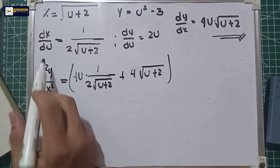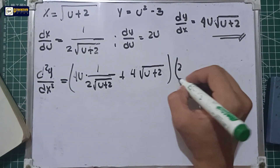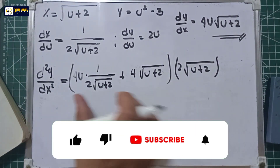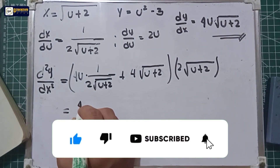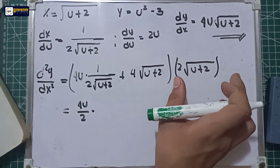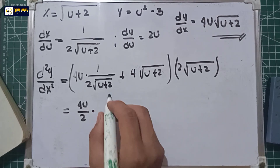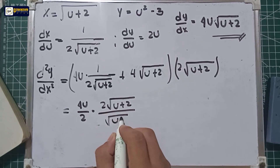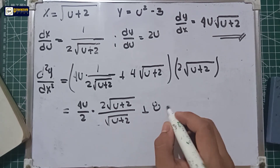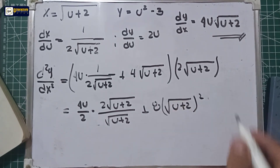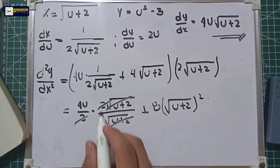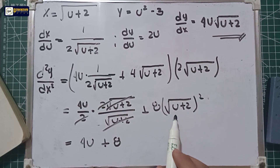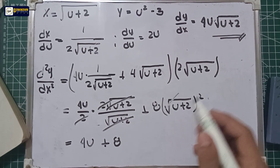That whole expression is then multiplied by the inverse of dx over du, which is 2 square root of u plus 2. We distribute this directly to the terms: 4u over 2 multiplied by 2 square root of u plus 2 over square root of u plus 2, plus 4 multiplied by 2 is 8, times square root of u plus 2 times square root of u plus 2.